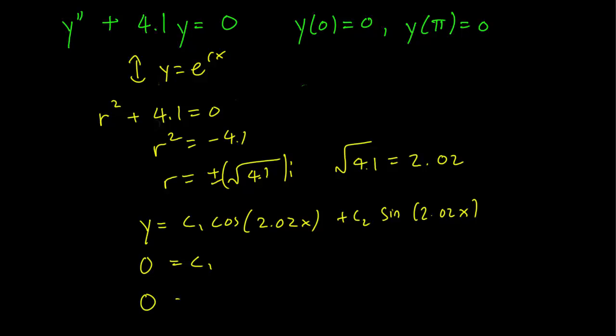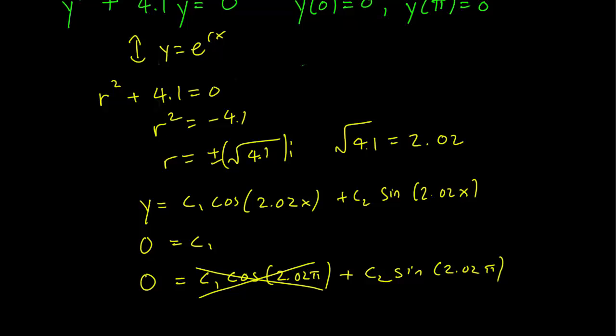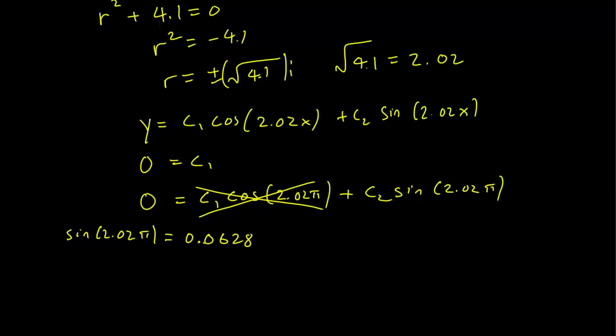We get y(π) = 0. So c₁cos(2.02π) + c₂sin(2.02π). We already know that c₁ equals 0, so we can cancel this out. And we get c₂sin(2.02π) = 0. However, we can calculate that sin(2.02π) is actually going to be equal to 0.0628. And this means that we have 0.0628 times c₂ equals 0, or c₂ equals 0.